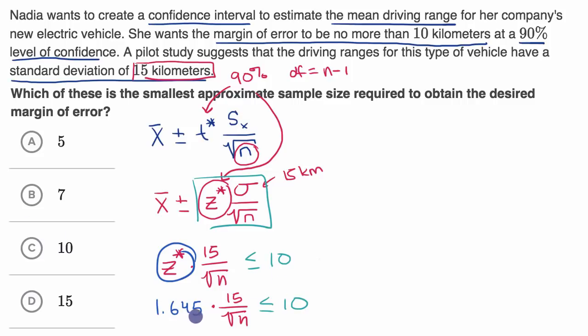So let's do that. So let's see. If I divide both sides by 1.645 and 15, what do I get? I get one over the square root of n is less than or equal to 10 over 1.645 over 15. And then if I take the reciprocal of both sides, I get the square root of n is greater than or equal to 1.645 times 15, all of that over 10.